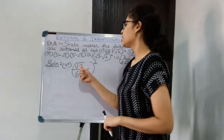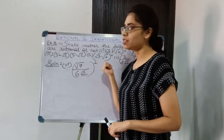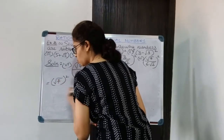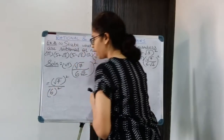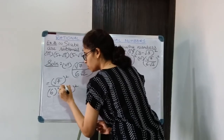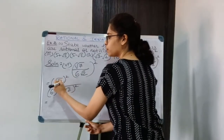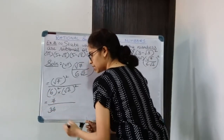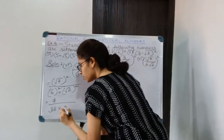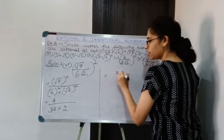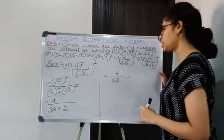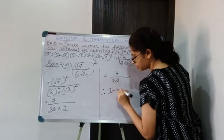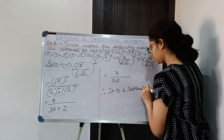Moving on to the last part of the question: (√7 / 6√2)². Squaring gives 7 / (6² × (√2)²). The square of the square root of 2 gives 2. So 6² = 36, and 36 × 2 = 72. The answer is 7/72, which is of the form p/q where q ≠ 0 and both are integers. Therefore, it is a rational number.